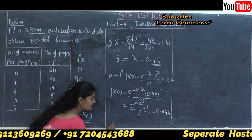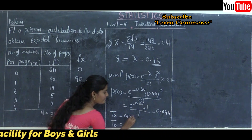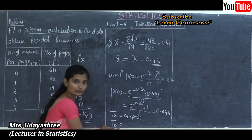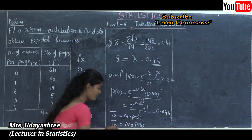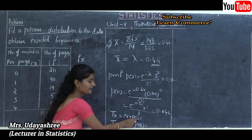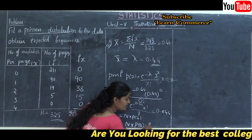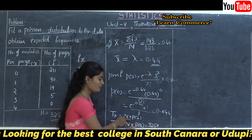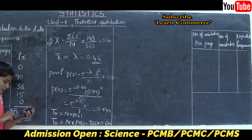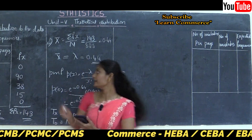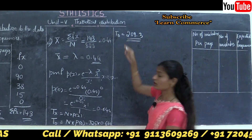Step 4: calculate the first term of the theoretical frequency using T(X) = N × P(X). For X = 0, T(0) = N × P(0) = 325 × 0.644 = 209.3.